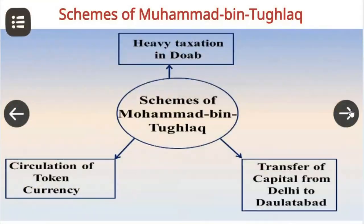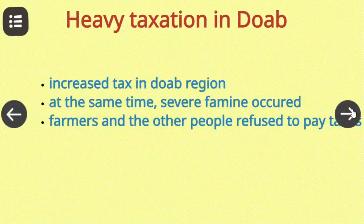Now let us discuss the important policies of Muhammad bin Tughlaq. The schemes were brilliantly conceived but poorly executed. The first scheme was heavy taxation in the Doab — the Ganga-Yamuna Doab.